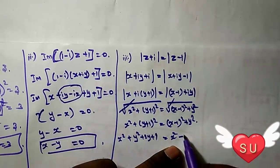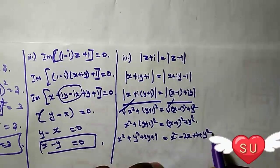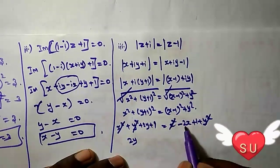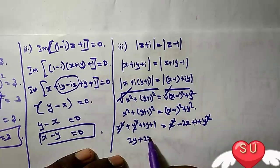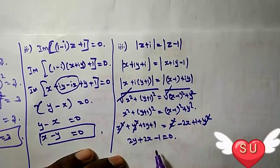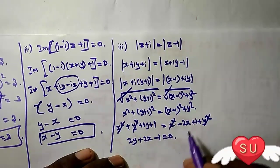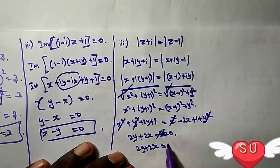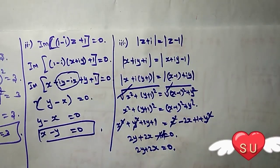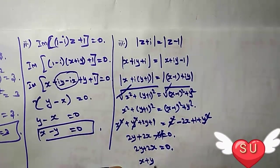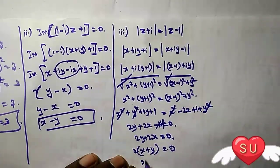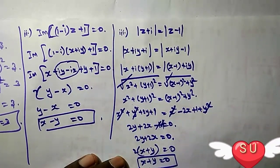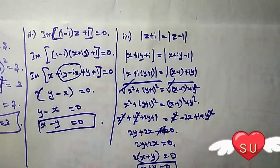Squaring both sides cancels the square roots: x² plus y² plus 2y plus 1 equals x² minus 2x plus 1 plus y². Simplifying, x² and y² cancel, and we get 2y plus 1 equals minus 2x plus 1. This gives 2y plus 2x equals 0, therefore x plus y equals 0.